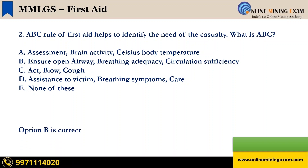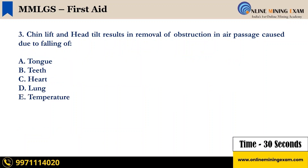Time up. The correct answer is B — ensure open airway, breathing adequacy, and circulation sufficiency. Next question: chin lift and head tilt results in removal of obstruction in air passages caused due to falling of — A — tongue; B — teeth; C — heart; D — lung; E — temperature. Your time starts now.